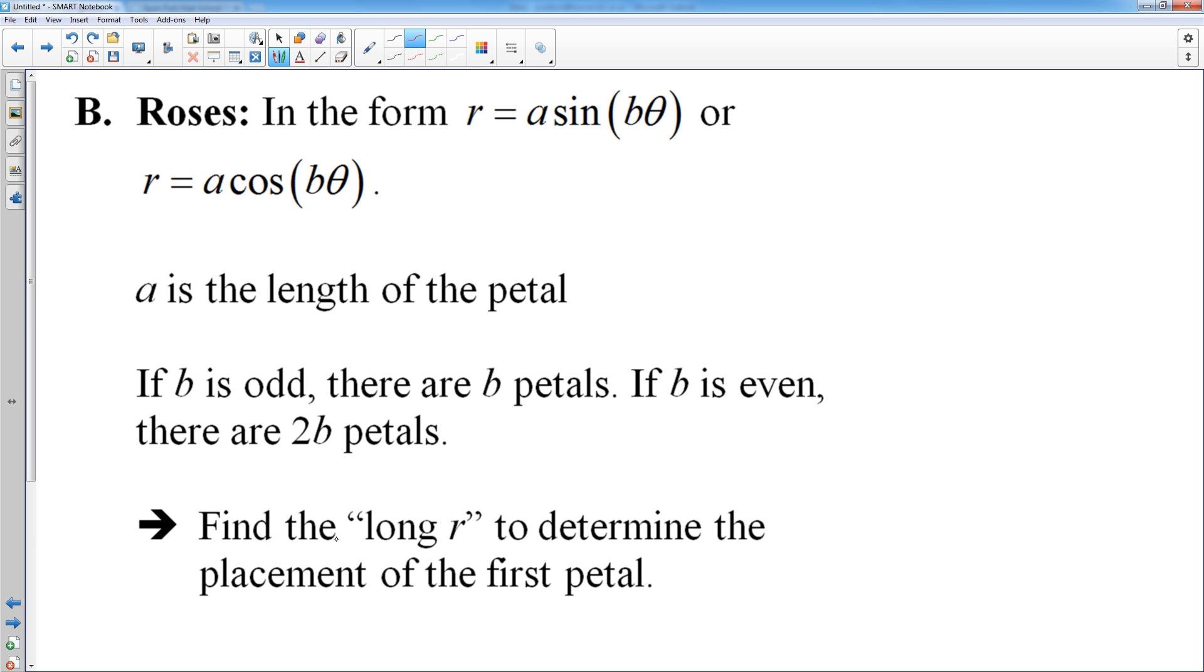Going on to more complex stuff. Roses. These are probably the most complex of the polar graphs I'm going to cover today. You have two forms. A sine B theta and A cosine B theta. A tells you how long the petal is. And B tells you how many petals you have. And you need to be careful because it is a different rule if B is odd or if B is even. So if B is odd, that's exactly how many petals you have. If B is even, you will double that to determine how many petals you have.